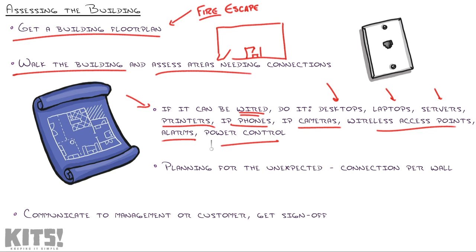Identify where those devices are in the building so you can already have in your mind where the network cable is going to go. You might choose a strategy to plan for the unexpected and put one connection per wall — so no matter where they locate the desks or devices in that room, there's going to be at least one wall jack there. If you do that, you risk wasting because you may end up installing wall jacks that never get used. You might also choose to install wall jacks with two or three ports — they make ones with eight ports where you can run eight individual cables and fan out to multiple devices.